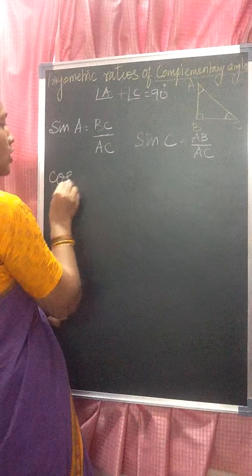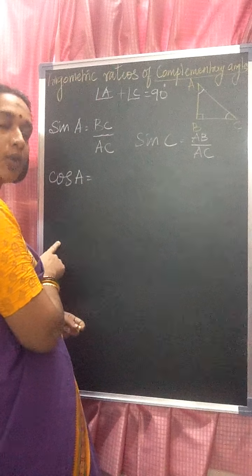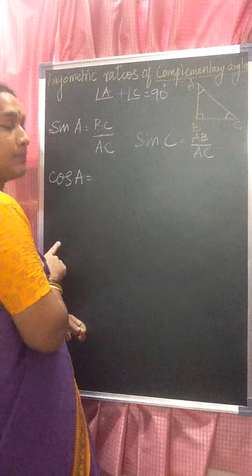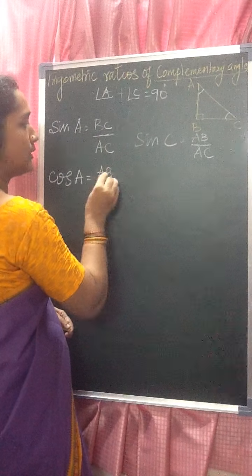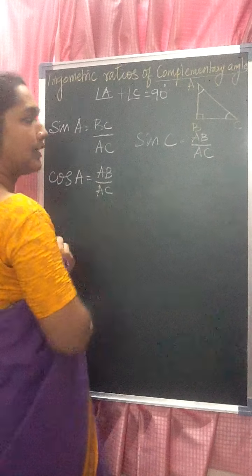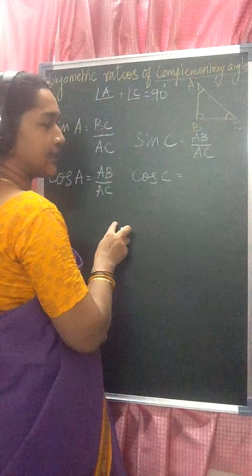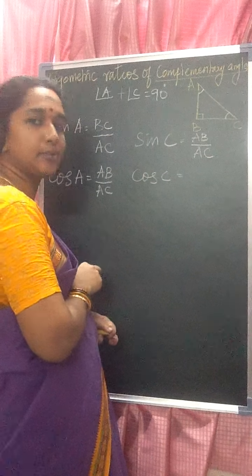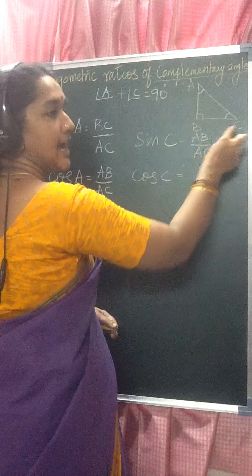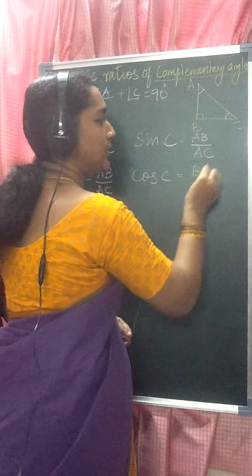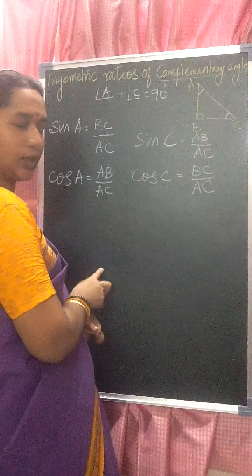Same way, you take cos also. Cos A is adjacent by hypotenuse. Then cos C — cos is also adjacent by hypotenuse only. So cos C: the adjacent side is BC, giving BC/AC.